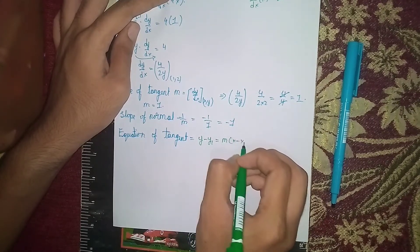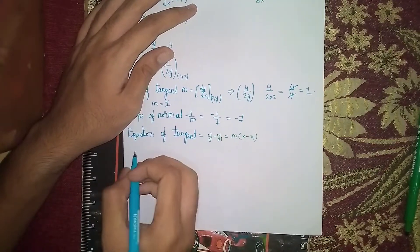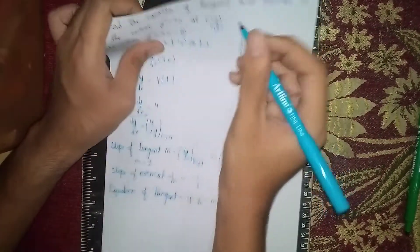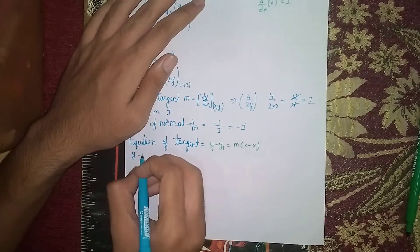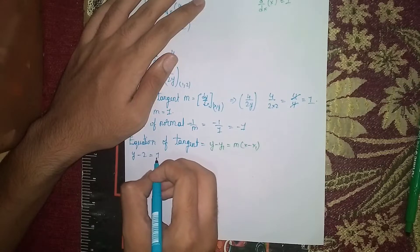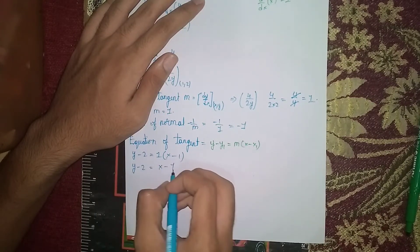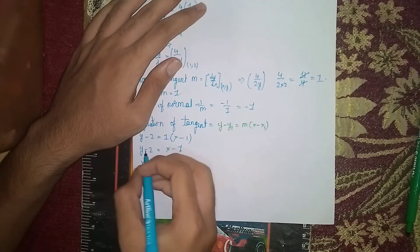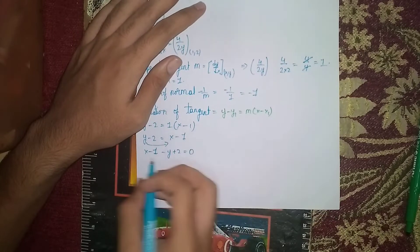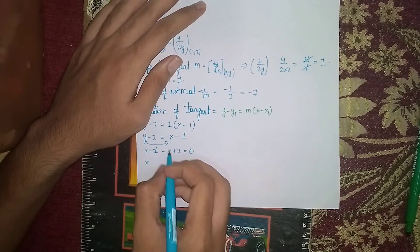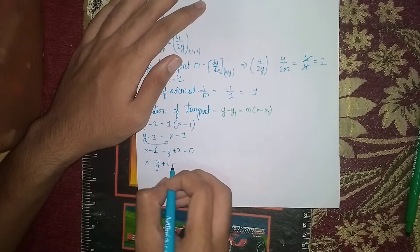Equation of tangent: the formula is y minus y₁ equals m times (x minus x₁). Here x₁ equals 1, y₁ equals 2, m equals 1. So y minus 2 equals 1 times (x minus 1), which gives y minus 2 equals x minus 1. Rearranging: x minus y plus 1 equals 0. This is the equation of the tangent.